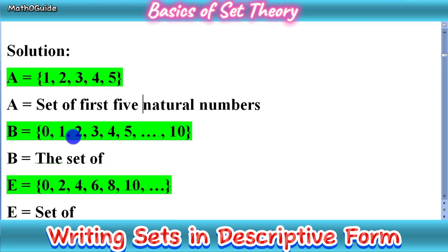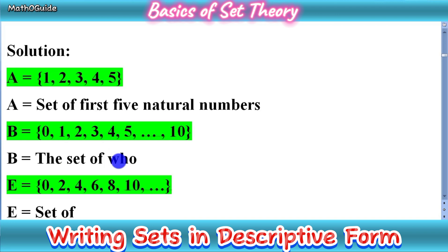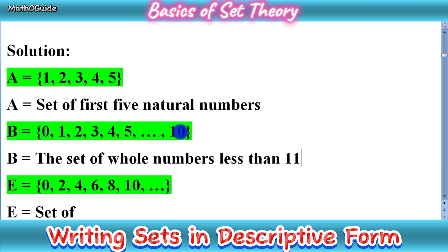Next, set B = {0, 1, 2, 3, 4, 5, ..., 10}. As you know, whole numbers start from 0, so this is a set of whole numbers. We write: set of whole numbers less than or equal to 10. You can also write it as whole numbers less than 11 — both methods are acceptable. Since 10 is included in this set, we write less than or equal to 10. This is the descriptive form of set B.